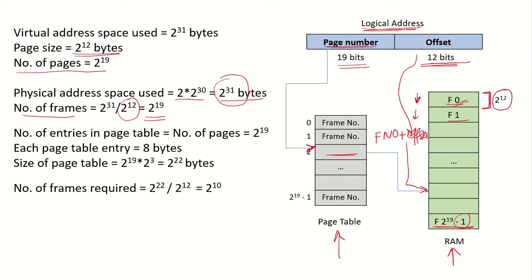The number of entries in the page table equals the number of pages, which is 2^19. Each page table entry is 8 bytes (given in the question). So if we construct one flat page table, its size would be 2^19 × 8 bytes = 2^19 × 2^3 = 2^22 bytes.